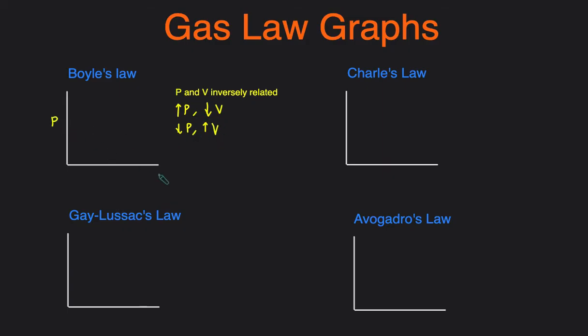We'll put pressure on the y-axis and volume on the x-axis, but you can switch them. Since it's inversely related, the graph will look like this.